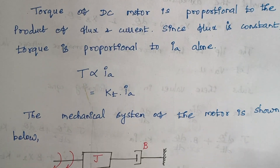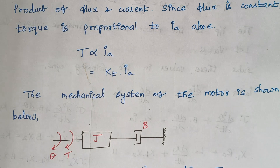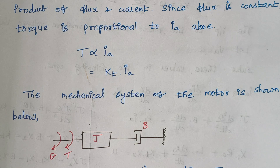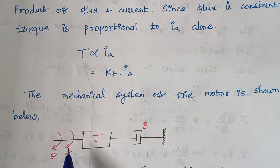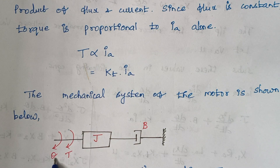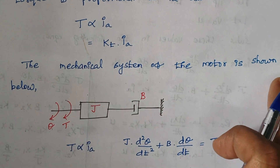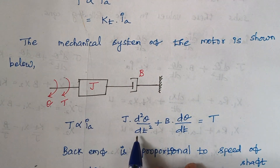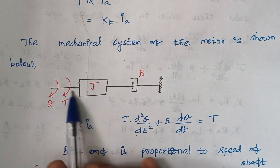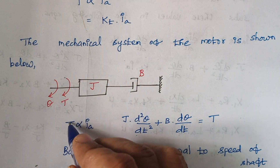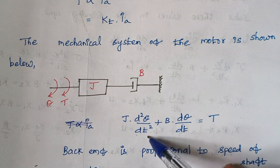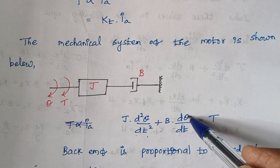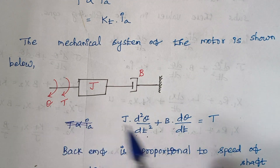The mechanical part consists of moment of inertia and dashpot. There will be some torque applied, and due to this torque there will be angular displacement. Framing the expression for this part: J·(d²θ/dt²) + B·(dθ/dt) = applied torque T. Here we are applying the law that applied torque equals opposing torque.